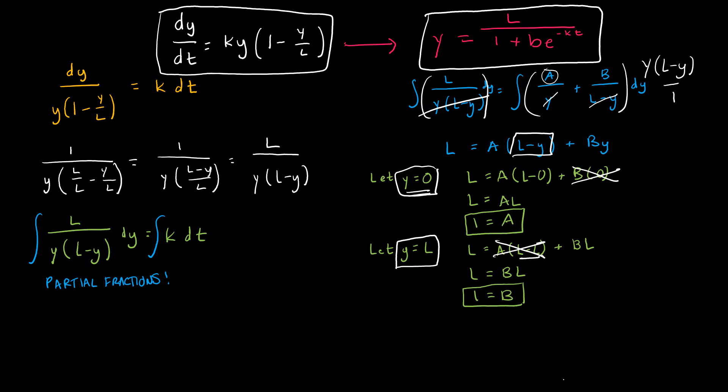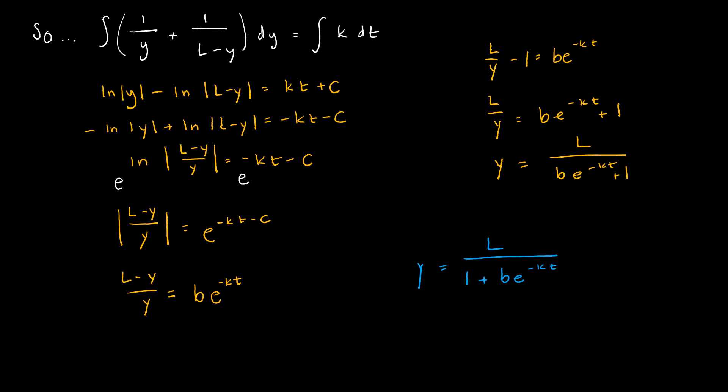So A equals 1 and B equals 1, meaning I can now rewrite my integral using those partial fractions. Integrating the left side gives the natural log of Y minus the natural log of (L minus Y). Integrating the right side gives KT plus C. I'm going to multiply everything by negative one because I'd rather have (L minus Y) in the numerator — it's easier to deal with.